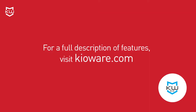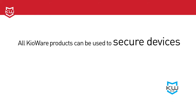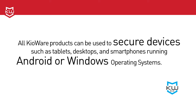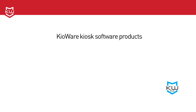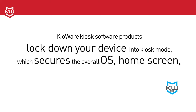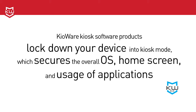To see a full description of new features in version 8.12 for the entire KeyWare for Windows product line, visit our website at m.keyware.com. All KeyWare products can be used to secure devices such as tablets, desktops, and smartphones running Android or Windows operating systems. KeyWare kiosk software products lock down your device into kiosk mode, which secures the overall operating system, home screen, and usage of applications. All of these products are available as a free trial at KeyWare.com.